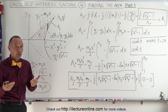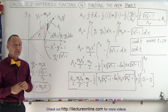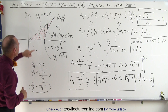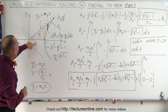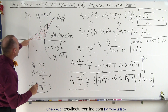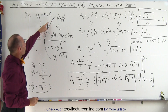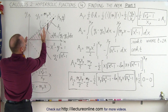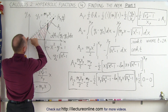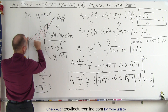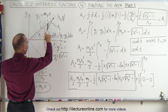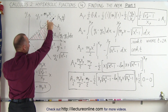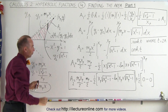Now this will require some calculus, so stay tuned. First of all, notice that the area can be subdivided into area 1, which is the triangular section, and area 2, which is the area between the two curves.